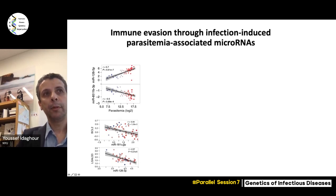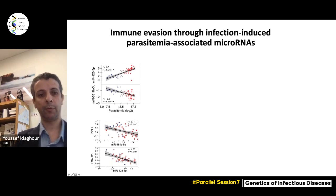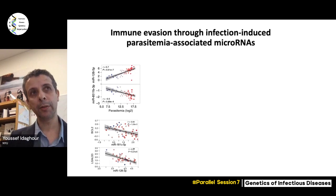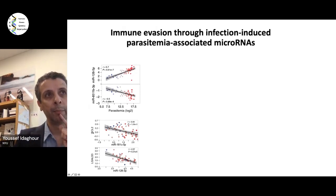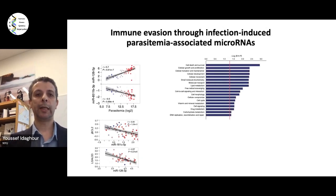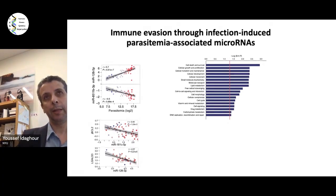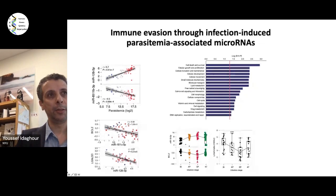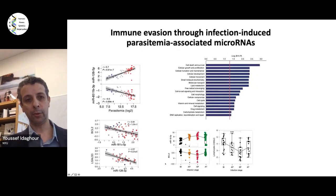Because some of these microRNA-mRNA pairs have been functionally validated as true targets — not just computationally predicted — that was our focus. The most interesting gene we discovered is BCL2, which is an anti-apoptotic gene. When we take the 1,000 messenger RNAs negatively correlated with microRNAs and do enrichment analysis, the top pathway enriched is cell death and survival. Our focus on BCL2 is because when the gene is expressed, cells don't undergo apoptosis; if it's downregulated, apoptotic processes are triggered.